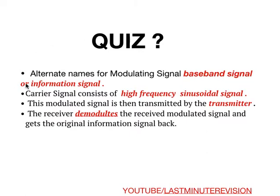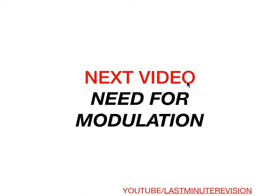Now a quick quiz: the alternate name for modulating signal is baseband signal or information signal. The carrier signal consists of a high frequency sinusoidal signal. The modulated signal is then transmitted by the transmitter. The receiver demodulates the received signal and gets back to the original form. That's what modulation is all about — in the next video we will see the need for modulation.